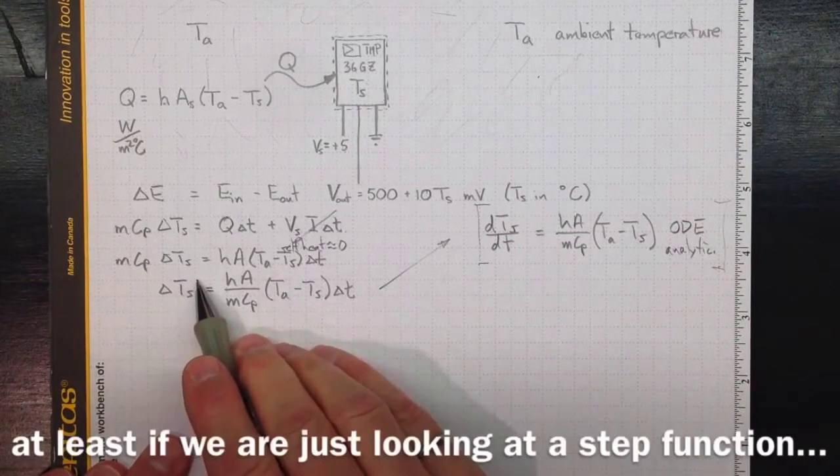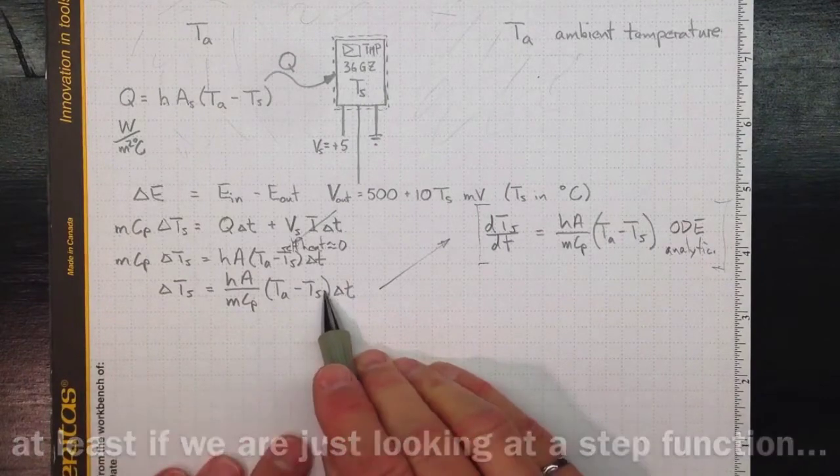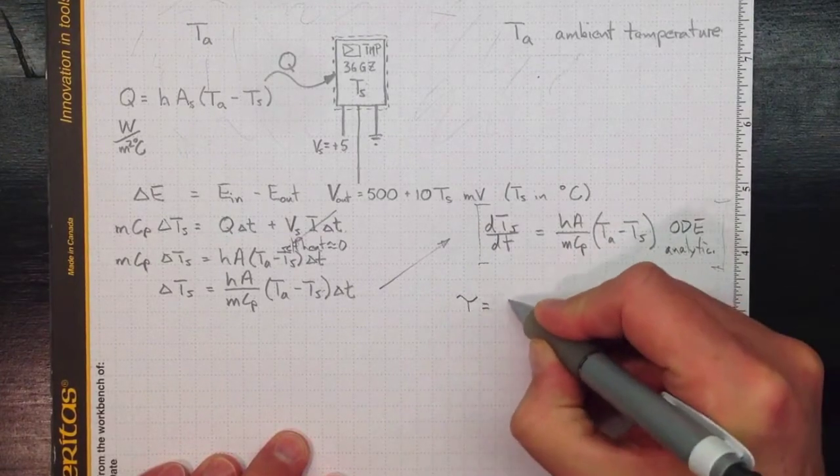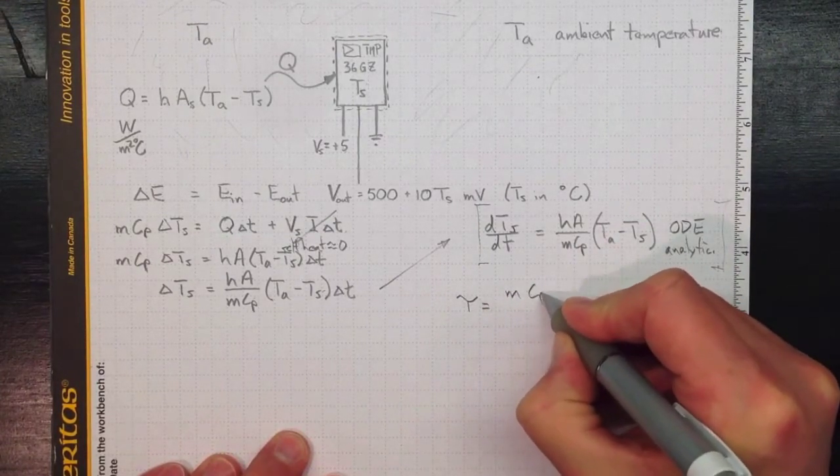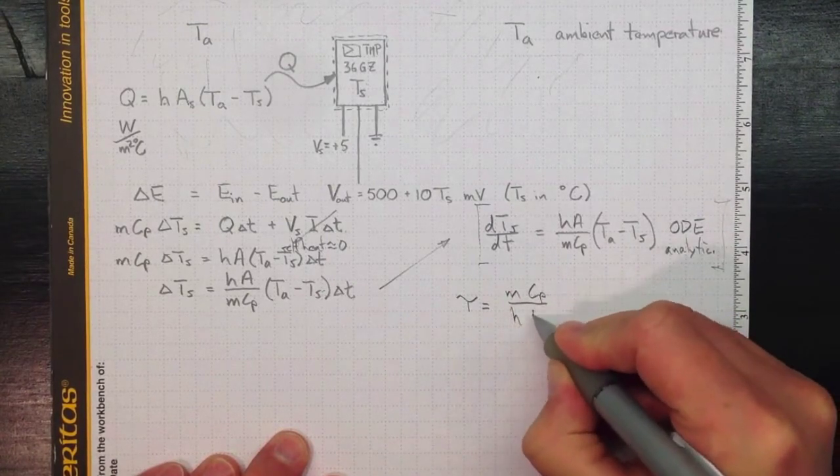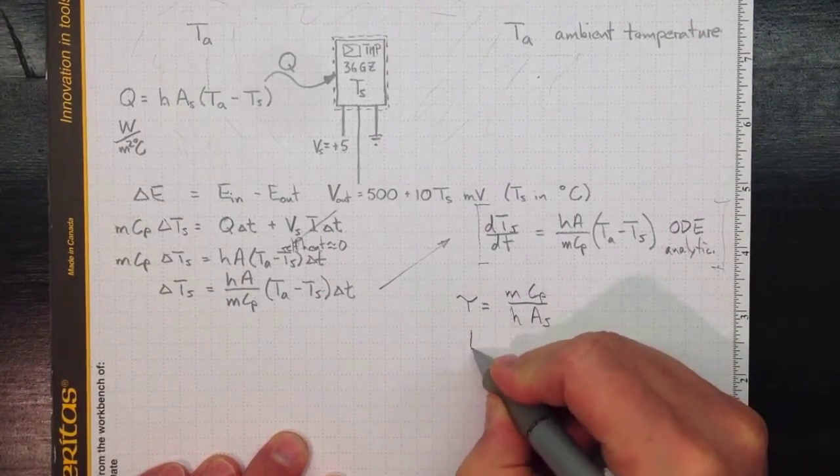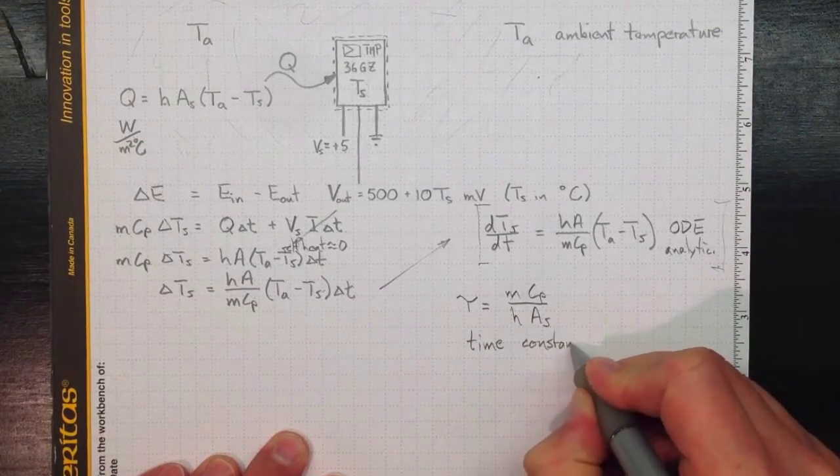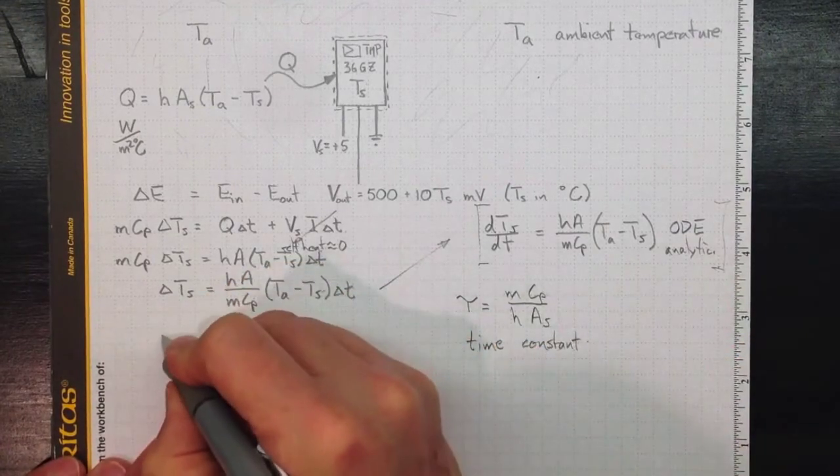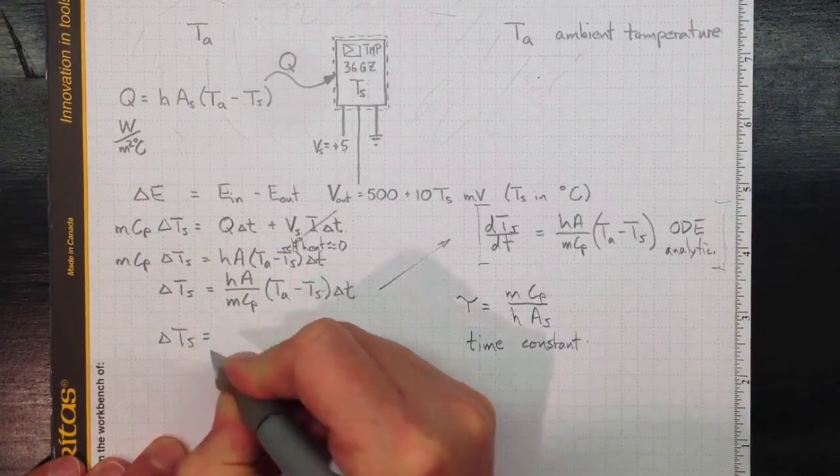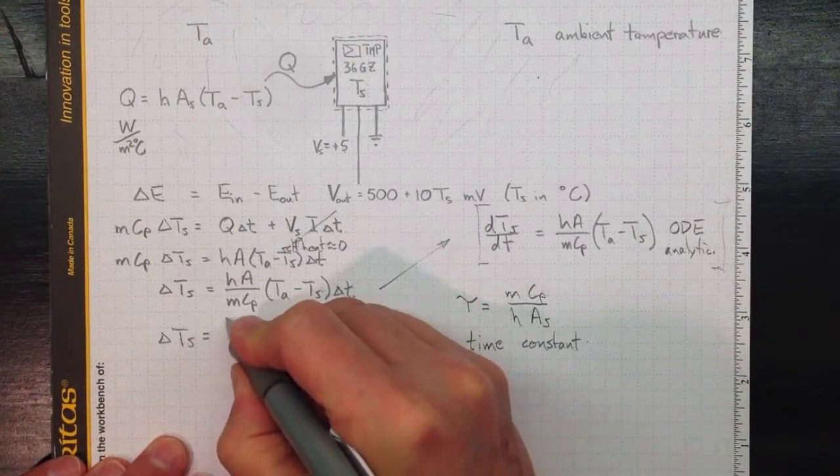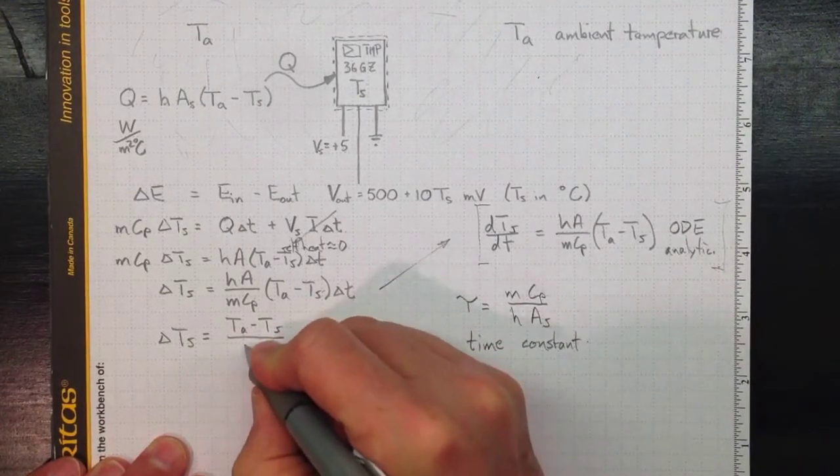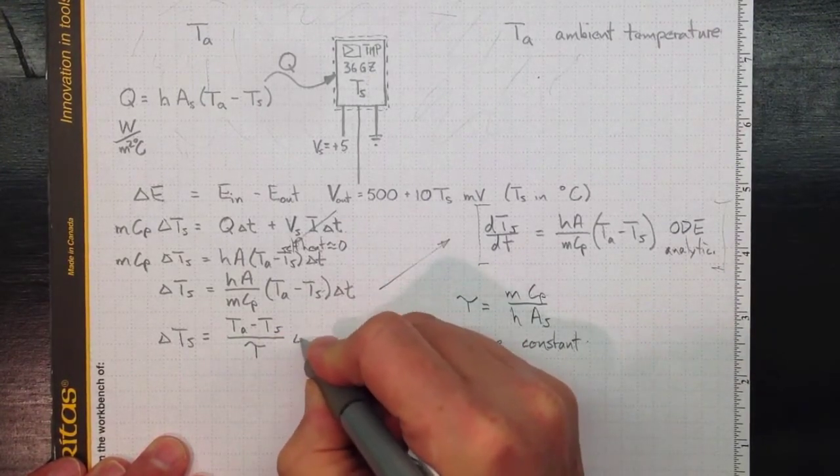So delta TS equal to HA over MCP times the temperature difference. Or if we define TAU as equal to MCP over H times AS and call that a time constant. Then we can rewrite this as delta TS equal to TA minus TS divided by that time constant TAU times delta T.